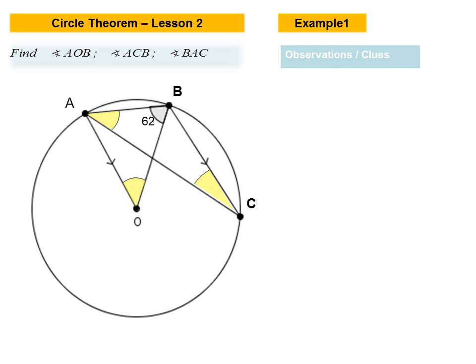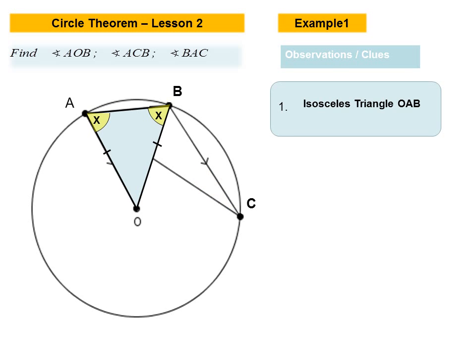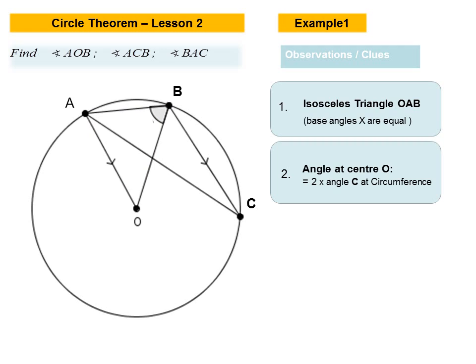In this case, our first clue is that we see an isosceles triangle, and of course the isosceles triangle predicts that the base angles — shown as X — will be equal. Our second clue is that from chord AB we have an angle subtended at O at the center, and we also have an angle subtended at C at the circumference.